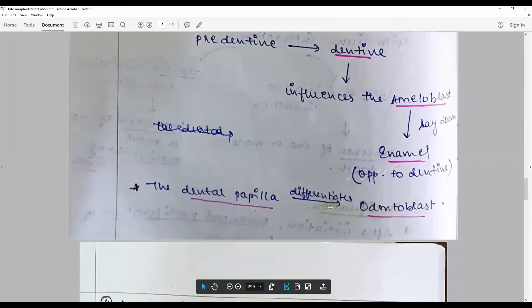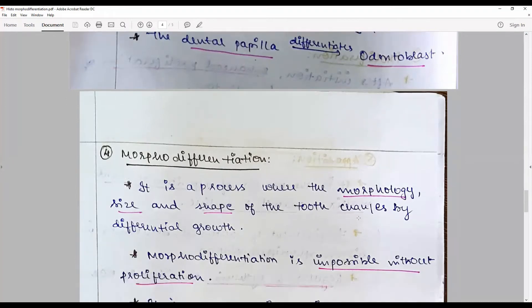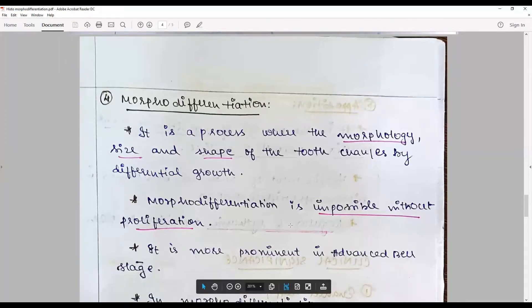The dental papilla differentiates into odontoblast. Morpho-differentiation is a process where morphologically the size and shape of the tooth change by differential growth. Morpho-differentiation happens with proliferation and histo-differentiation. It is an interconnected, intertwined, orchestrated phenomenon.